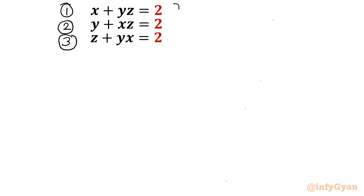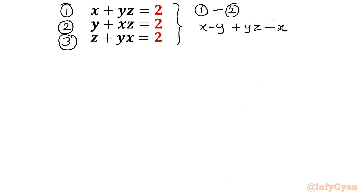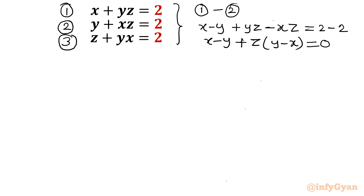From this system of equations I am going to do equation 1 minus equation 2. So x minus y plus yz minus xz equals 2 minus 2. I will write x minus y, then take z common: y minus x. Taking x minus y common out, we get x minus y times 1 minus z equal to 0.